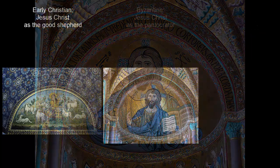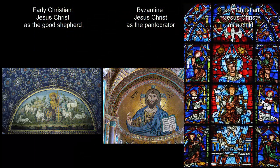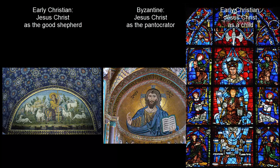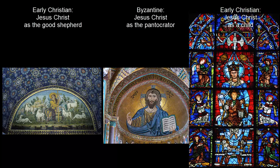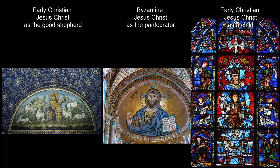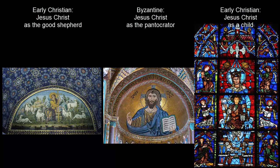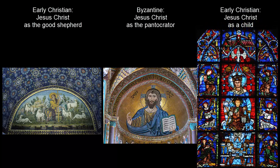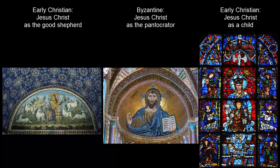And suddenly, in the Gothic era, Jesus Christ is now depicted as a baby, a helpless child, being protected by the Virgin Mary — he is on her lap. As I've mentioned before, he is seated on the throne of wisdom, which was another term given to Mary. So there's a complete shift in how Jesus Christ is depicted during the Gothic era.